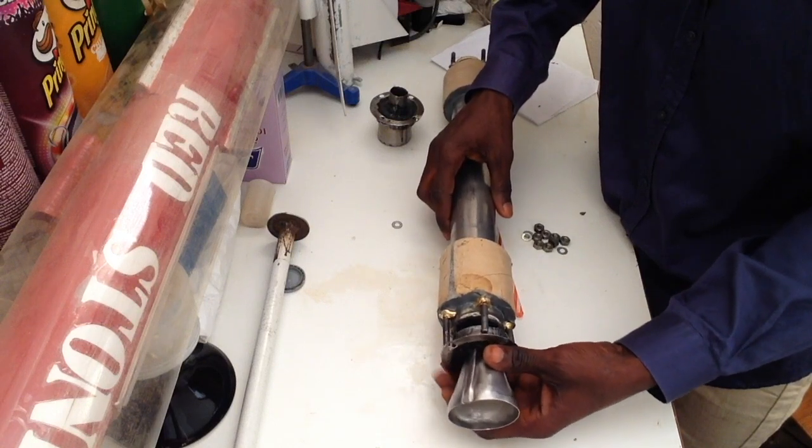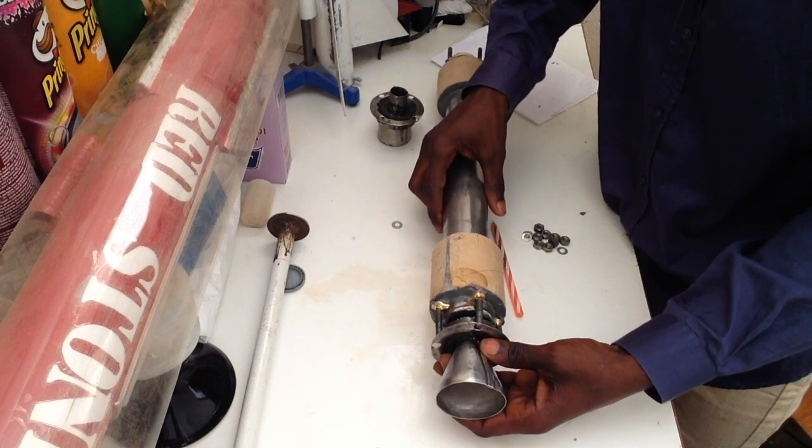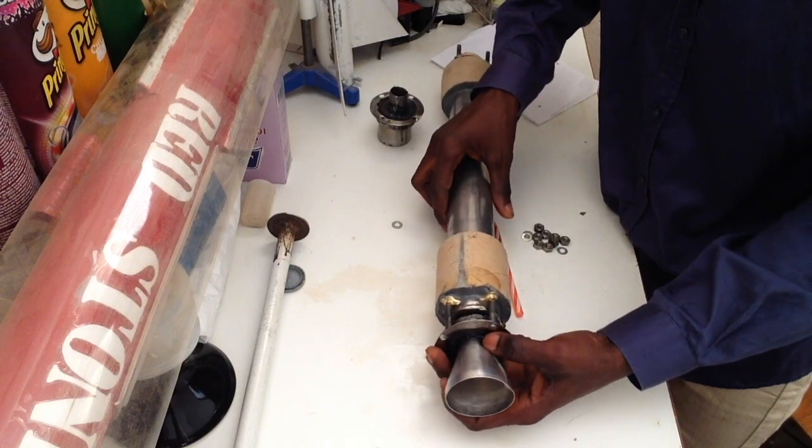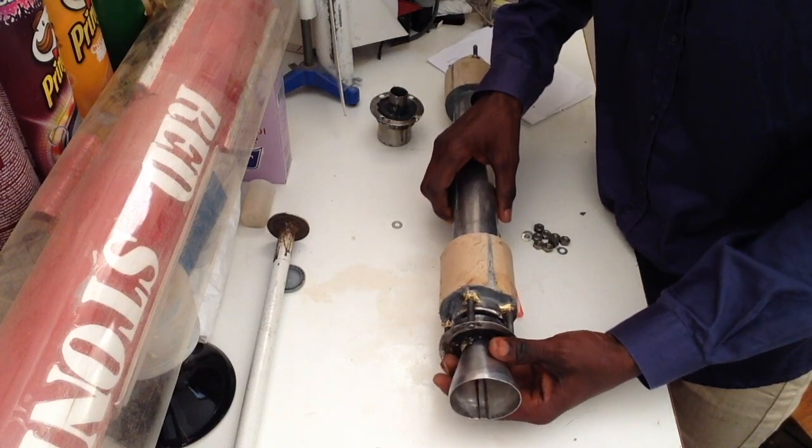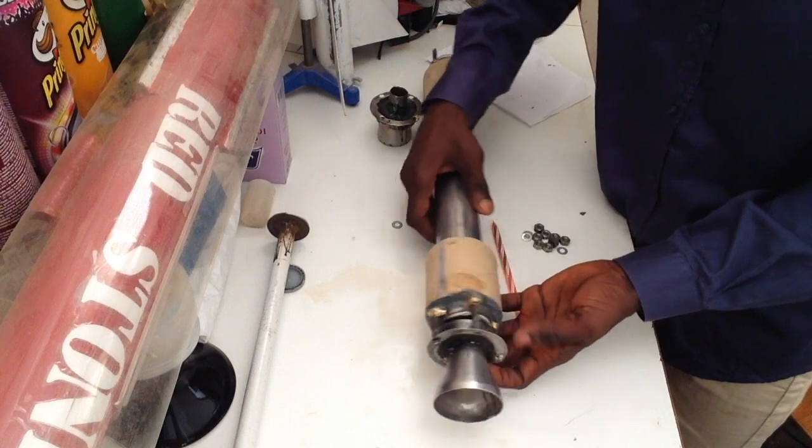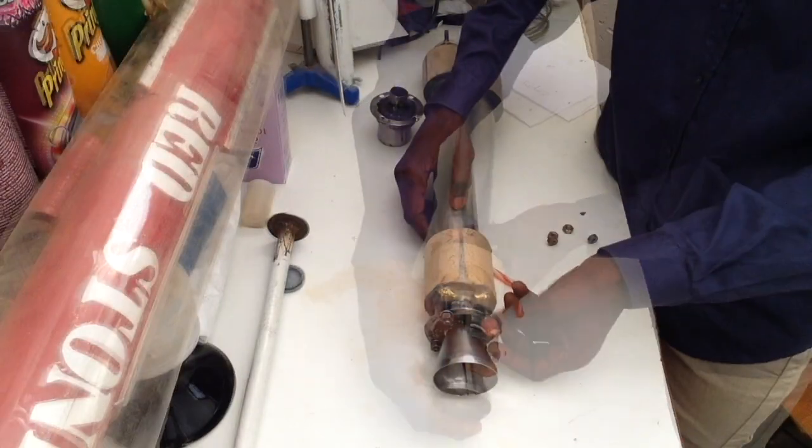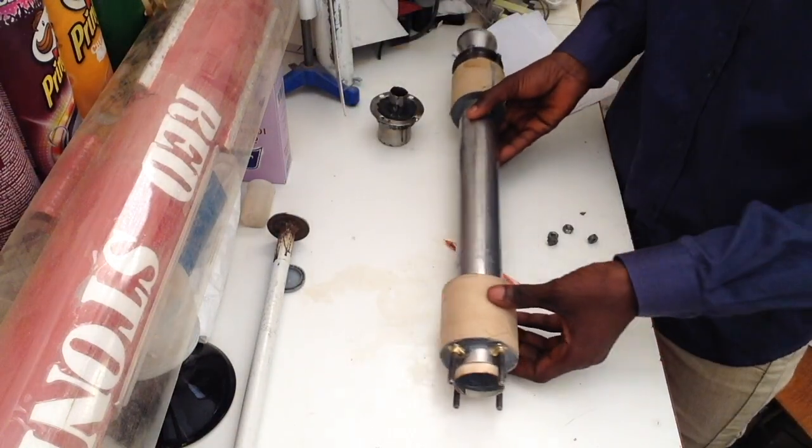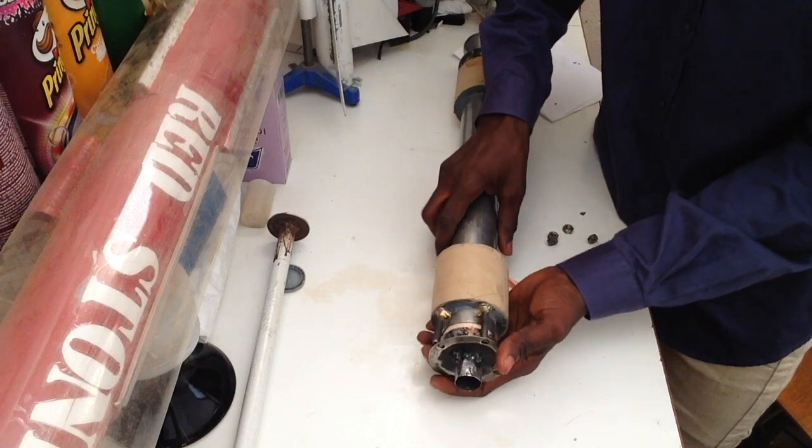But before that, let me show you how the engine would be assembled in real time. After the propellant is loaded inside the cylinder, you then slide the nozzle in between the four back screws towards the main body as shown here. Now these screws will then find their way to the corresponding holes of the nozzle ring, which are now tightened with nuts. We then repeat the same procedure for the ejection shock device on the other side of the cylinder.